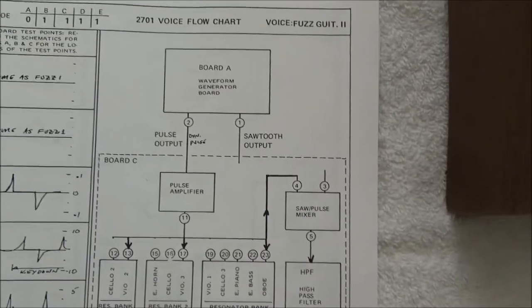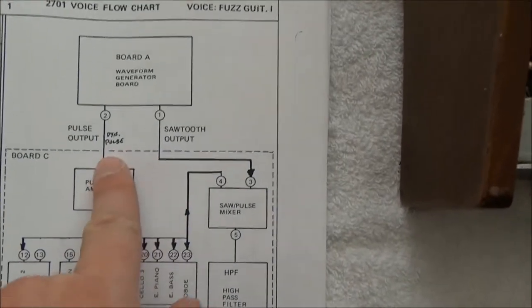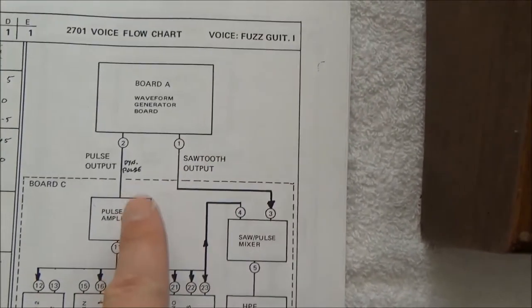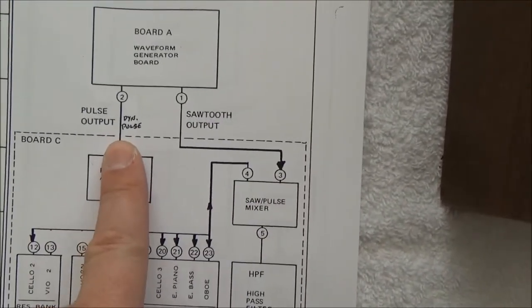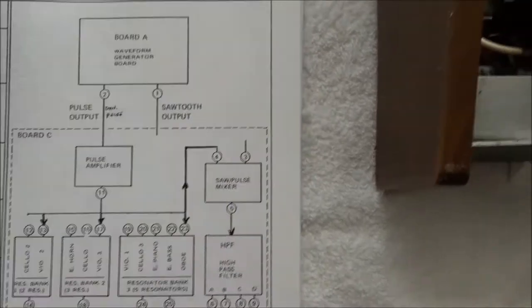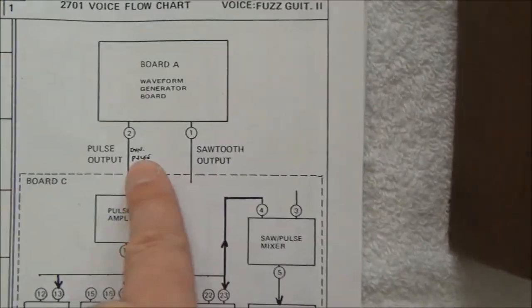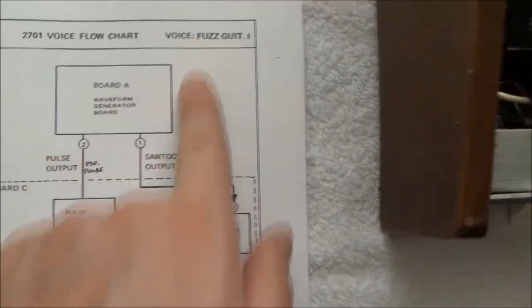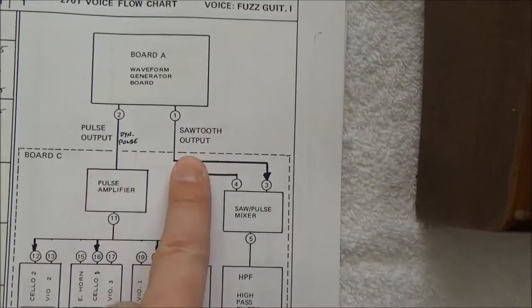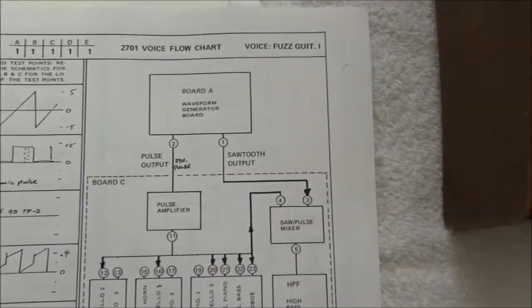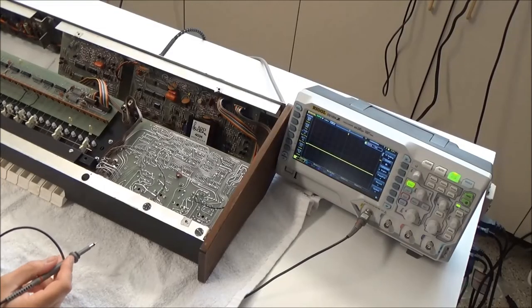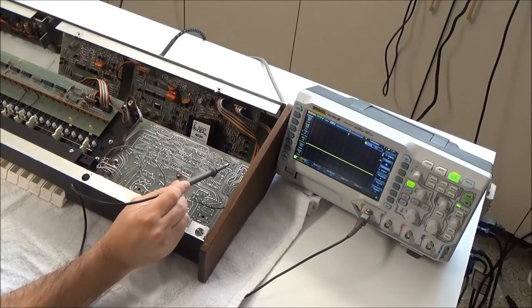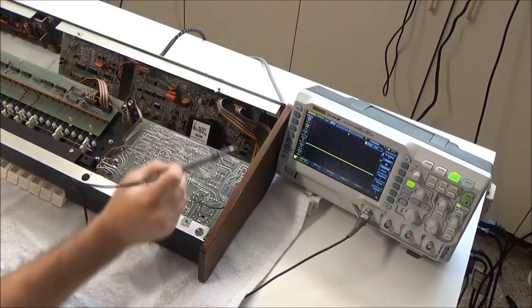Let's take a look at that for the working one. I see a difference here. Fuzz Guitar 1 uses both pulse and sawtooth, and Fuzz Guitar 2 just uses the pulse. But let's go take a look for the working Fuzz Guitar 1 at the pulse and the sawtooth and then compare to Fuzz Guitar 2. I've got Fuzz Guitar 1 on and I'm going to take a look at the output from board A to board C.